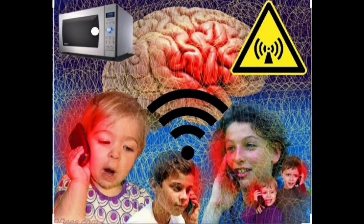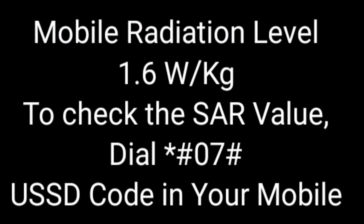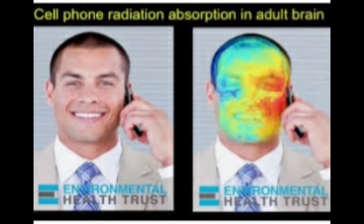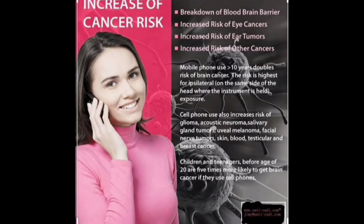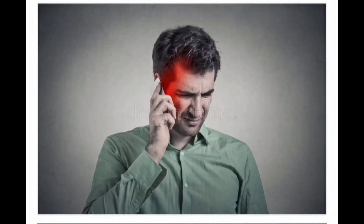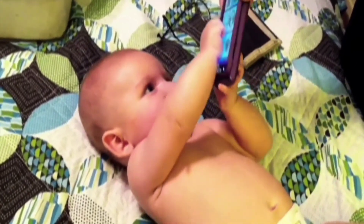To check the mobile radiation level, look for the SAR — Specific Absorption Rate — value. Dial *#07# (star hash zero seven hash) as a USSD code in your mobile phone. The threshold value for radiation level is 1.6 watts per kilogram. If the SAR value is less than 1.6 W/kg, it is okay to use that phone.